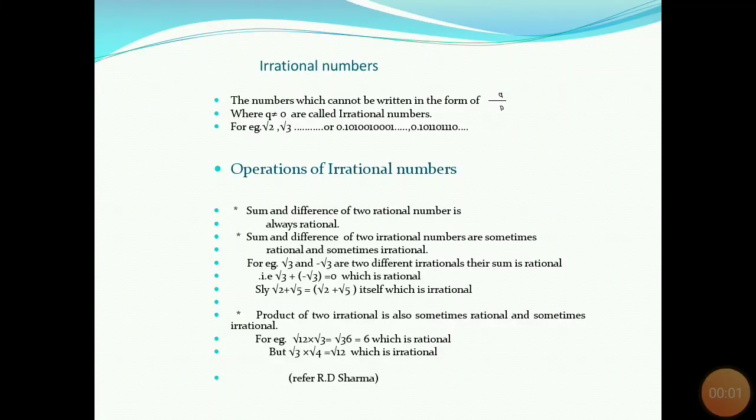Next is irrational numbers. The numbers which cannot be written in the form of P by Q, where Q is not equal to 0, are called irrational numbers. For example, root 2, root 3 — all these are irrational numbers.